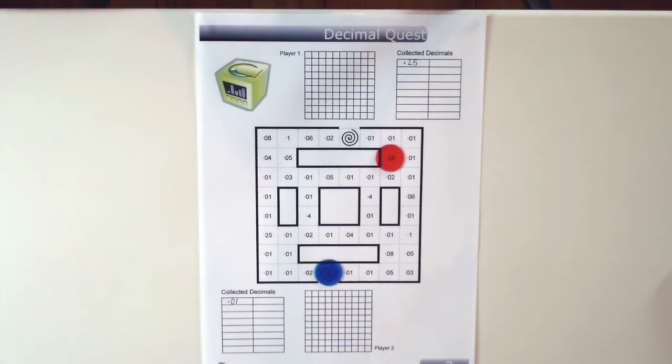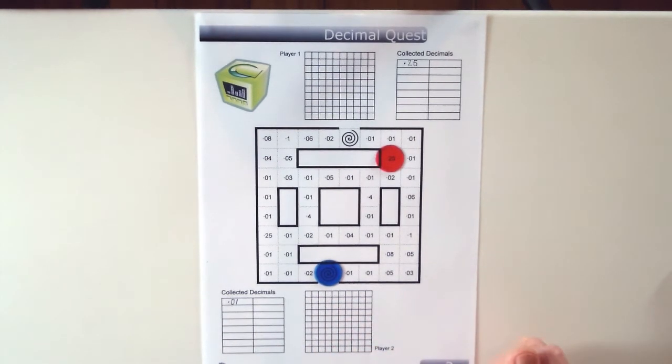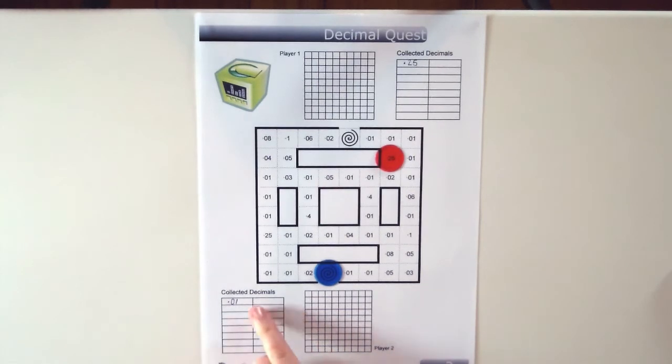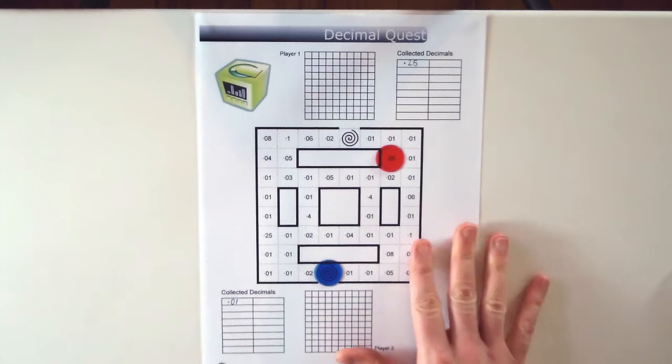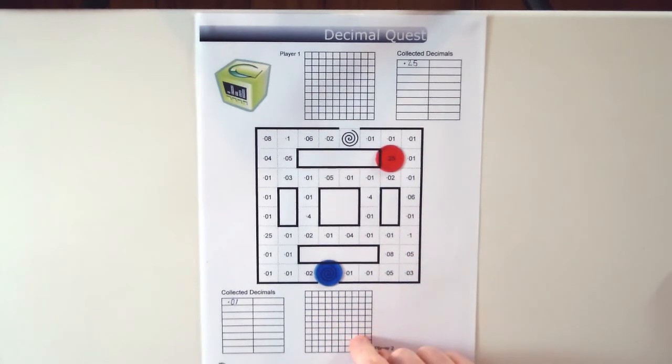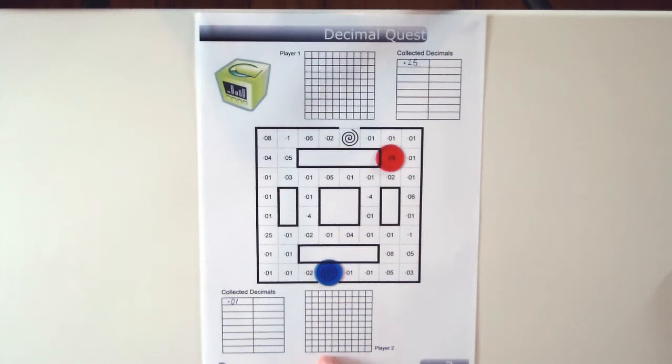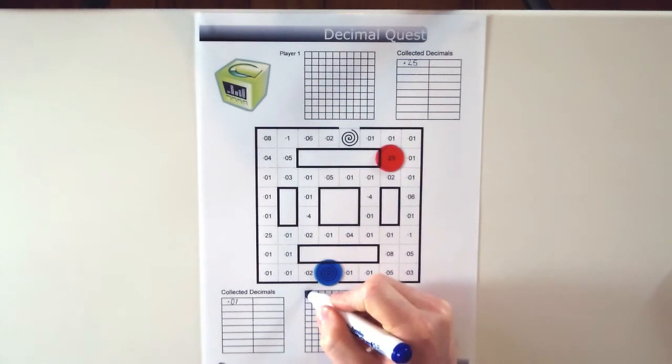Now this is where you can explain to the students, maybe draw it on the board or something, what 0.01 means. And when they're playing this game they'll probably have a pretty good idea of how big a decimal is already. So we've got, there are a hundred squares on here, it's a 10 by 10 grid. So 0.01 would take up one square.